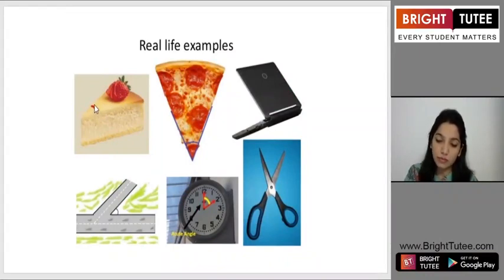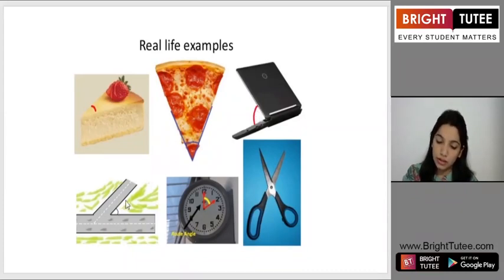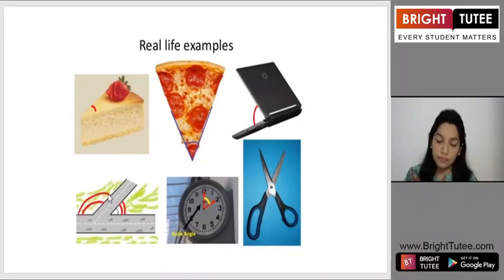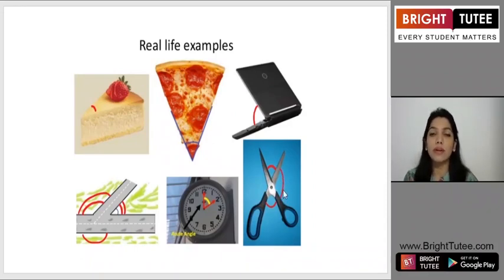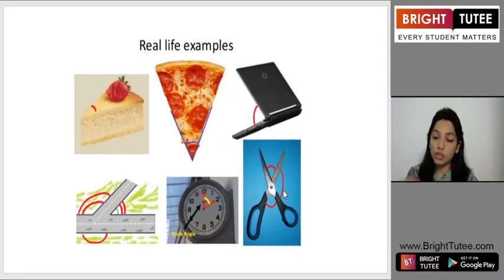There are also simple real-life examples of angles around us. In this piece of cake or pizza slice you have a small acute angle. Looking at this laptop you can see an angle here. On the road, one side shows an acute angle and the other side shows an obtuse angle. A straight angle is another simple example. In scissors we see acute angles and also obtuse angles. Similarly, the angle a door makes when you open it depends on how far you open it.